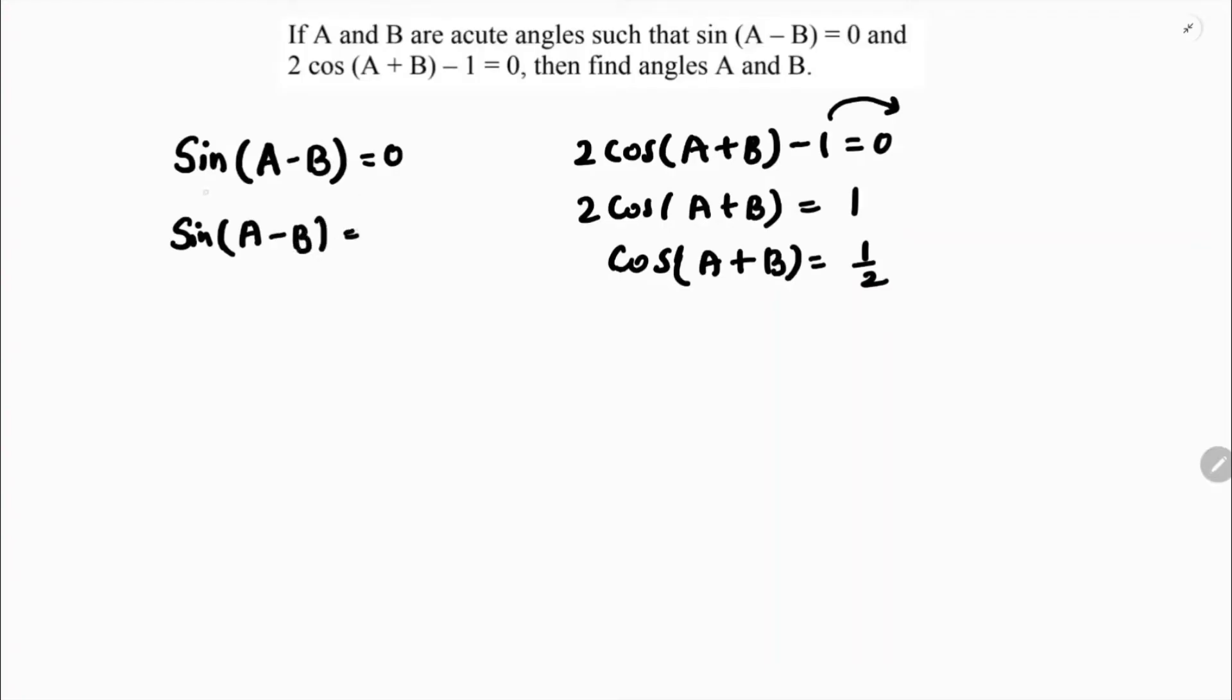So sin(A-B) equals sin 0 degrees. So clearly A minus B is 0 degrees. So A and B values will be mostly the same, but we will solve it. Here clearly it says A equals B.